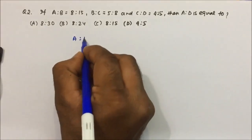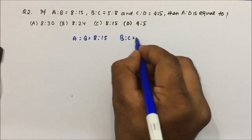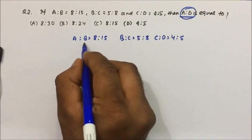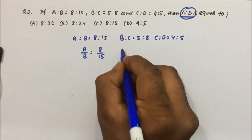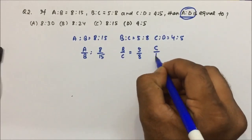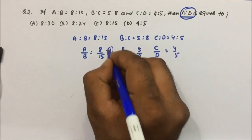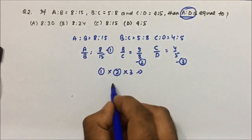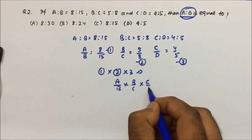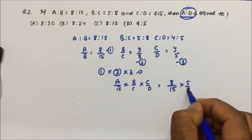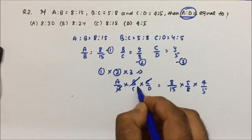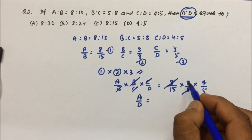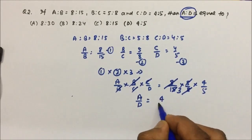Question 2: if A:B = 8:15, B:C = 5:8, and C:D = 4:5, find A:D. We can write A/B = 8/15, B/C = 5/8, and C/D = 4/5. Multiply all three equations: (A/B) × (B/C) × (C/D) = (8/15) × (5/8) × (4/5). On the left, B and B cancel, C and C cancel, giving A/D. On the right, 8 and 8 cancel, and 5 divides giving 4/15.